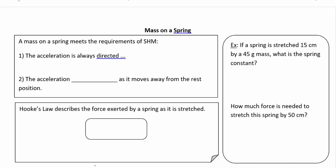If you hang a mass from a spring it's going to oscillate back and forth, and that is going to meet the requirements of simple harmonic motion. There are two particular criteria: the first is that the acceleration is always directed towards equilibrium, and the second is that the acceleration increases as it moves away from the rest position — it increases linearly, a direct relationship.